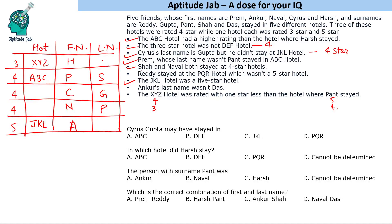Suppose Punth stayed in a four-star hotel, making XYZ the three-star hotel. Then Ankur's last name is not Das, so Harsh would be Das and Ankur would be Reddy. But Reddy should stay at the PQR hotel — and that leads to a contradiction. So assuming Punth stays in a four-star hotel gives us an incorrect result.